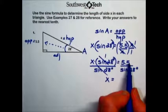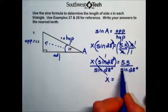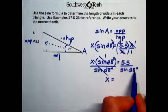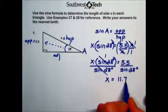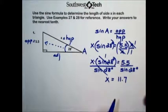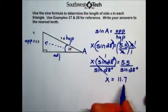you will begin with 5.5 divided by, and then your angle measure, 28, and hit your equals, giving us a value of 11.7 for the hypotenuse when rounded to the nearest tenth.